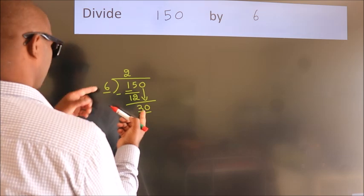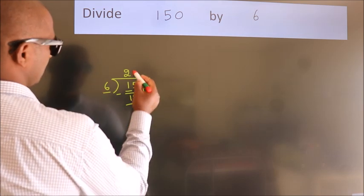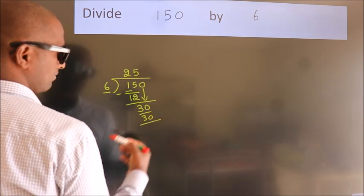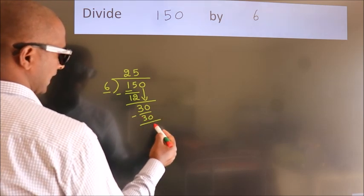When do we get 30? In the 6 table, 6 fives 30. Now we subtract. We get 0.